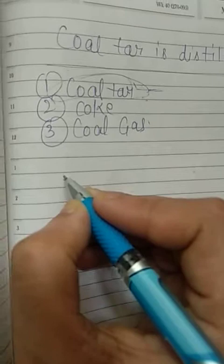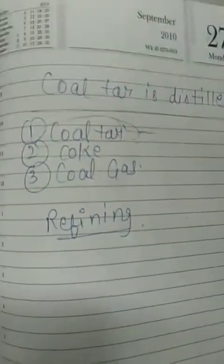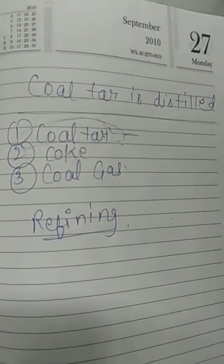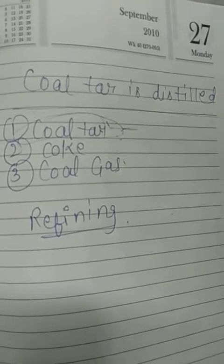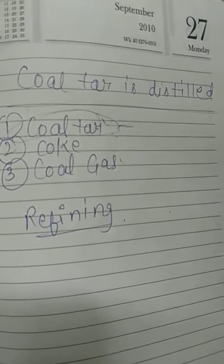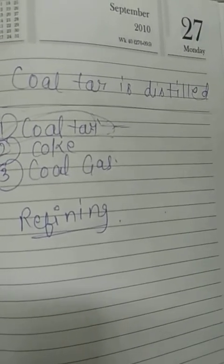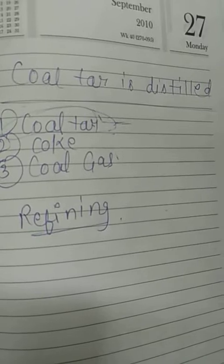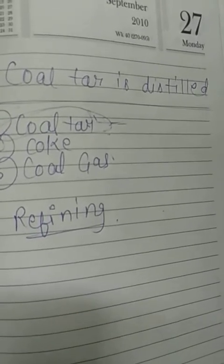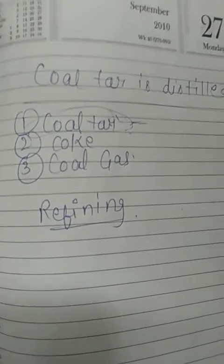The next question is: what do you mean by refining? We cannot use crude oil directly, so we need to separate its components first. The process of separating crude oil into different useful components by fractional distillation is known as refining. The components of petroleum obtained include petrol, diesel, and kerosene.